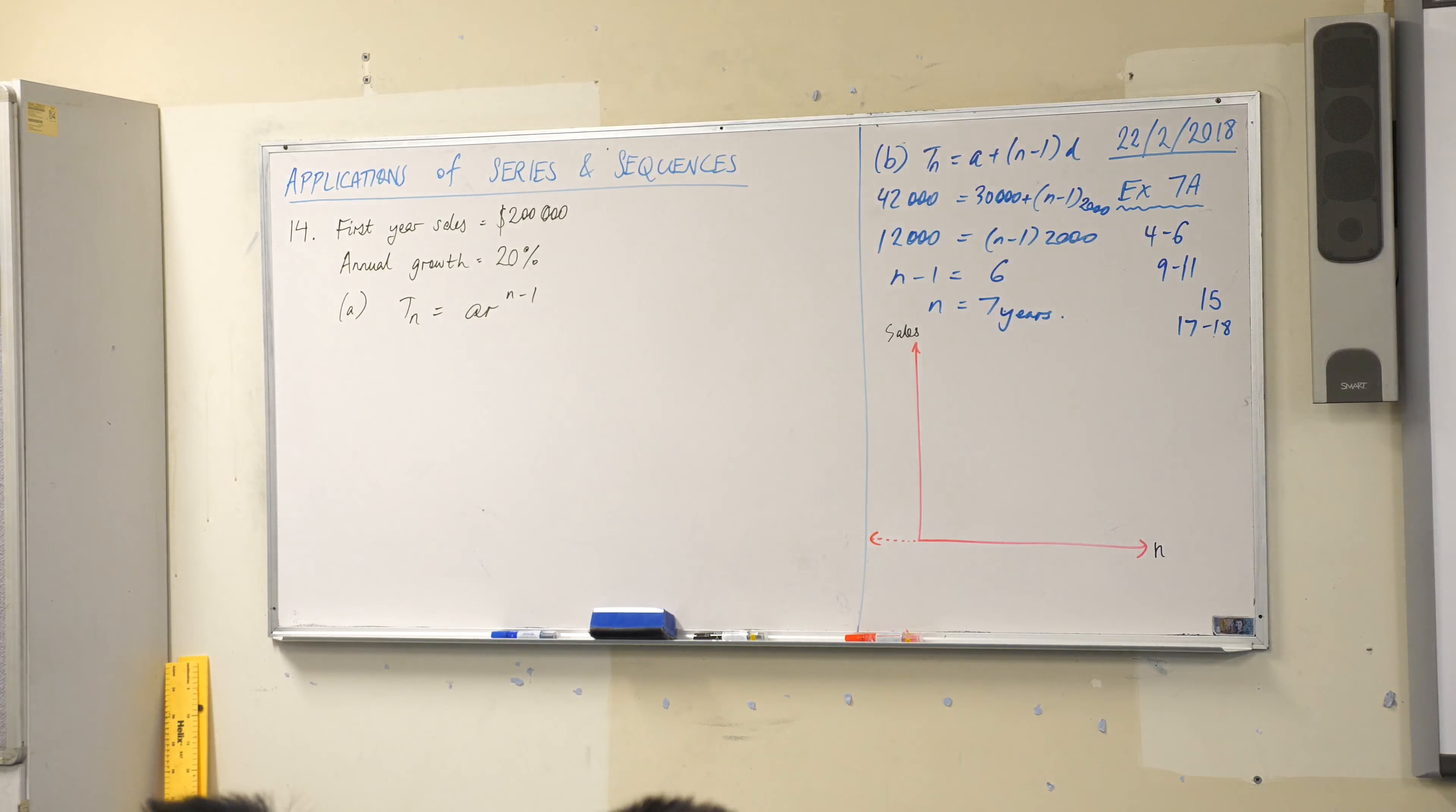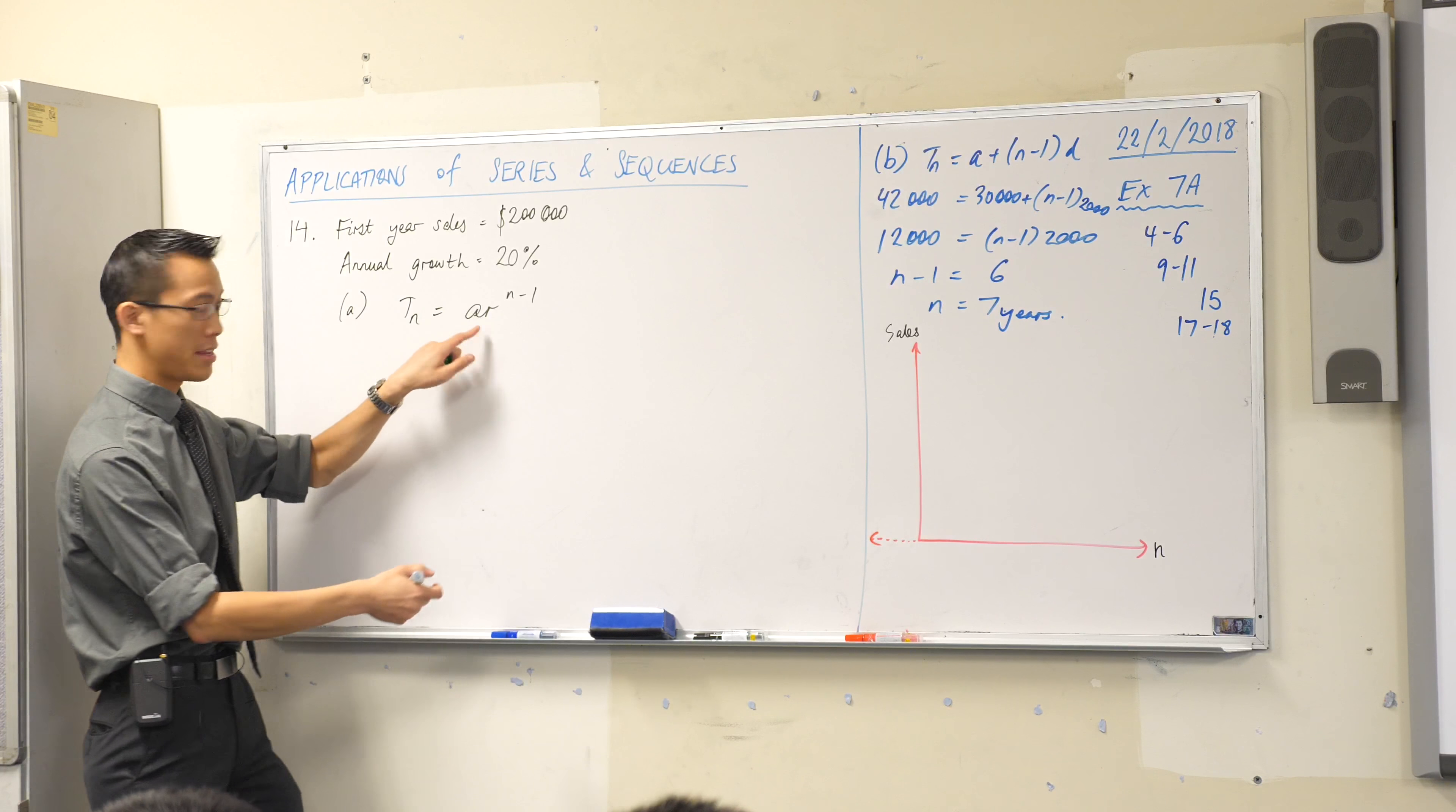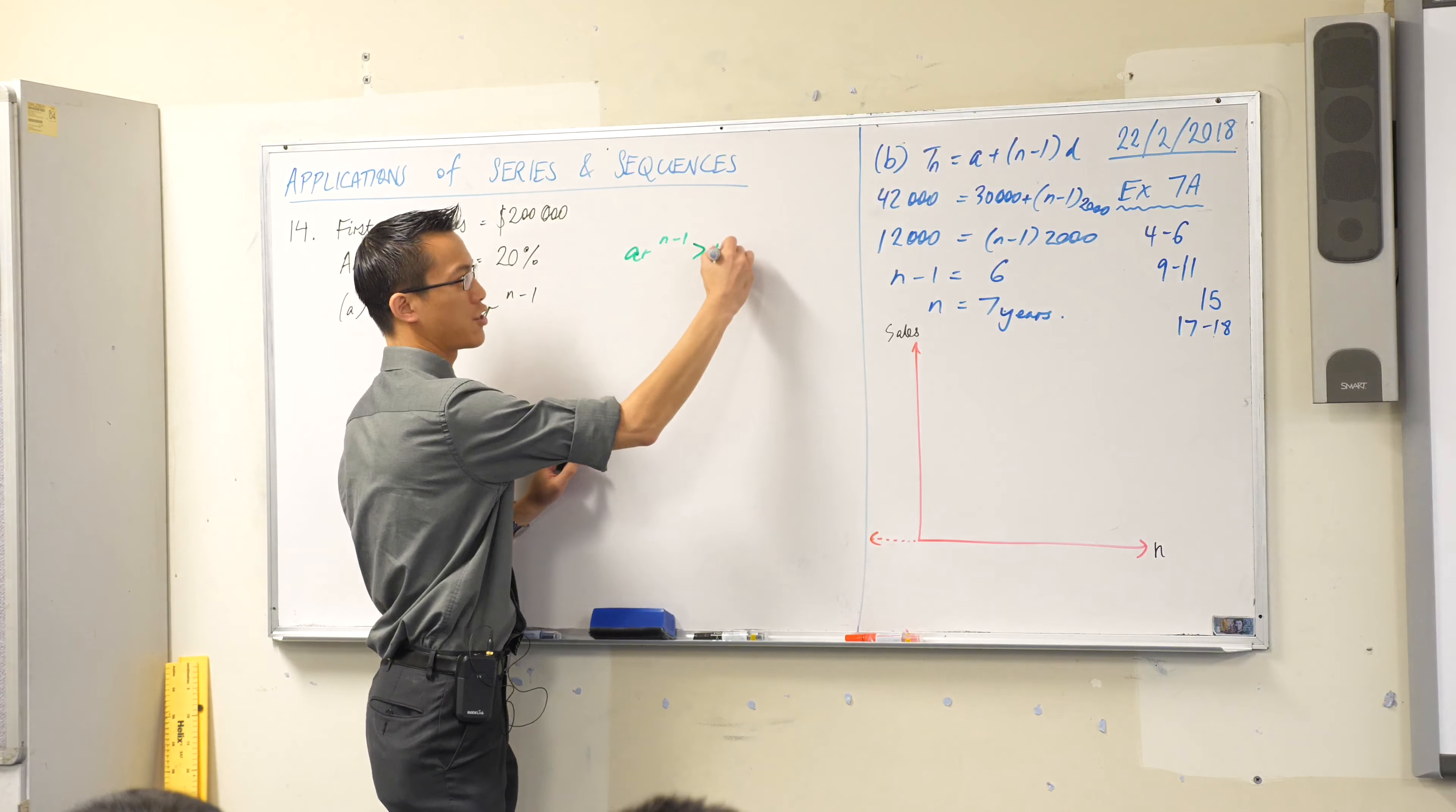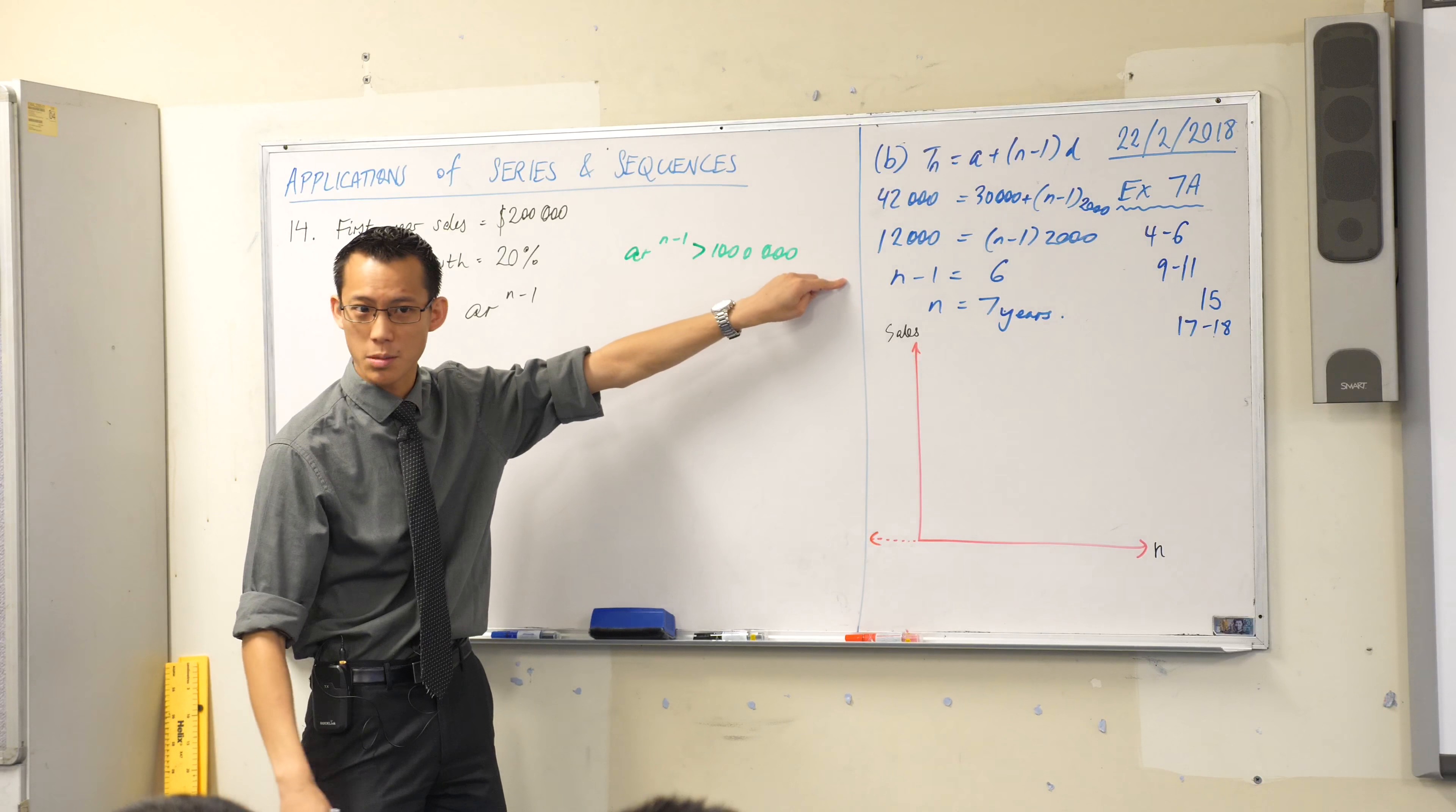Strictly speaking, probably the most technically correct way to write the next line is to say I want this thing AR to the N minus 1. I want to exceed a million dollars. So strictly speaking, I should write this. Like I want that Nth term to be more than a million dollars, and there's no reason why you can't do that.